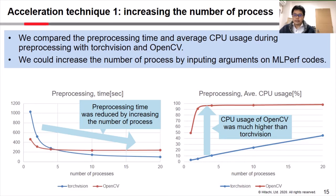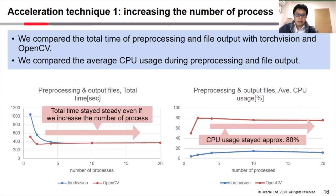Next, we compare the total time of preprocessing and file output with TorchVision and OpenCV. Please look at the left figure. It indicates the total time of preprocessing and output files. As you can see, total time stayed steady even if we increased the number of processes. We also compare the average CPU usage during preprocessing and file output.